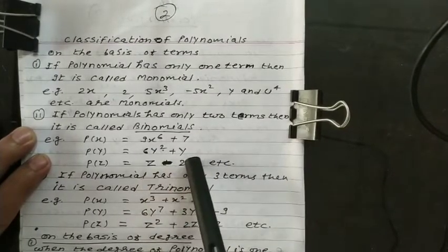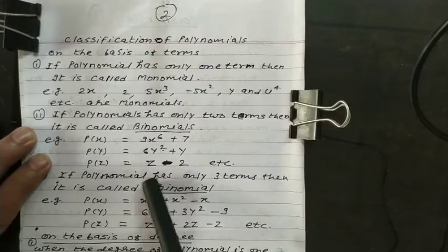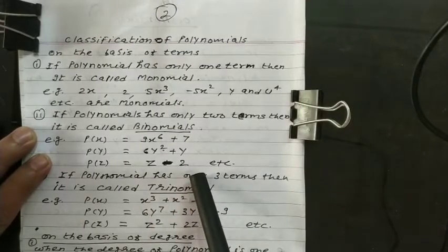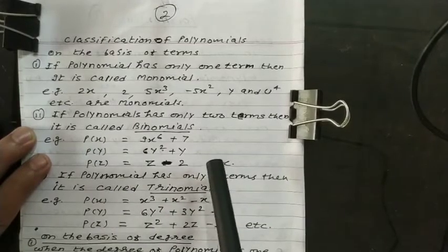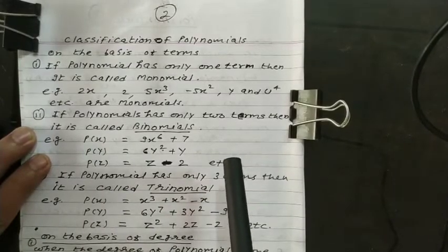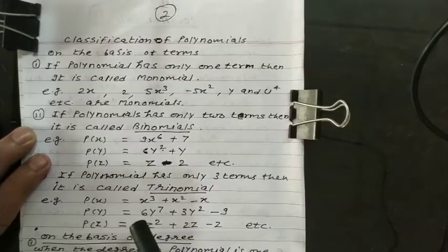In the second example, 6y² is the first term, y is the second term. In the third example, z is the first term, -2 is the second term. So all these p(x), p(y), and p(z) carry only two terms. Therefore, it is known as binomial.